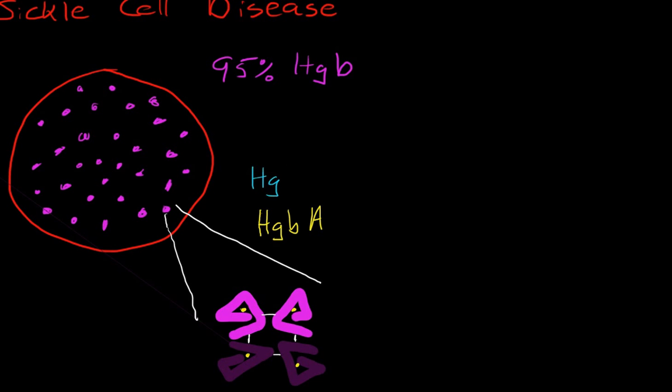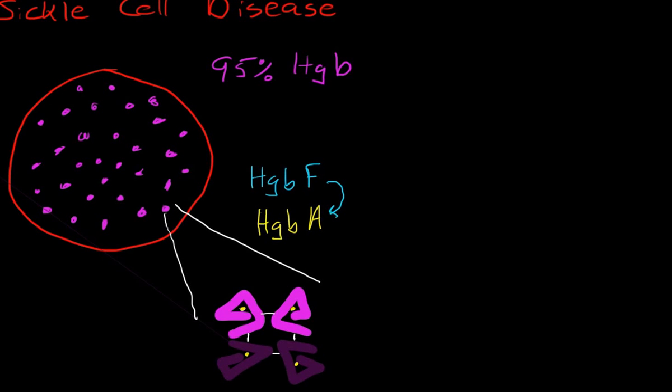One is called hemoglobin F, which is fetal hemoglobin. This makes up about 3% of normal adult hemoglobin, and obviously it's the most common type in fetuses. It slowly goes away and gets replaced by hemoglobin A during the first few months of life.